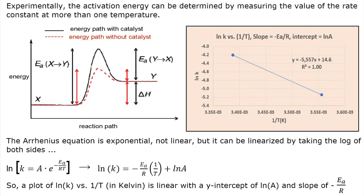Temperature also affects reaction rates, so in the first part of this experiment all reactions are run at constant room temperature. In the second part of this experiment we run the reactions in ice water, and using the two temperatures and the data we'll be able to calculate the activation energy using the Arrhenius equation.